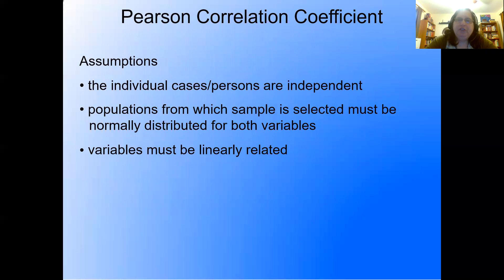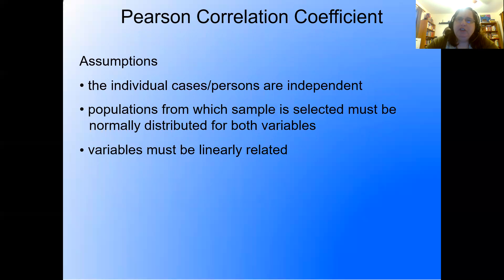Let's look at the assumptions for this statistic. First, the individuals, cases, or persons are independent — that's a common assumption we've dealt with before. Second, the populations from which the sample is selected must be normally distributed for both variables, since this time we have two continuous variables. Third, the variables must be linearly related — if you're guessing this has something to do with a line, you're absolutely right.